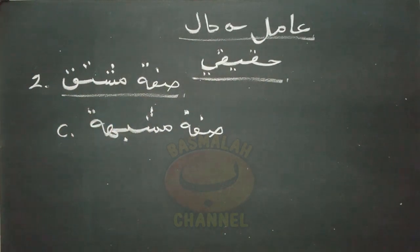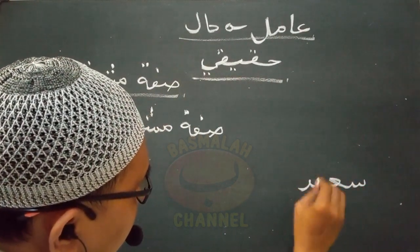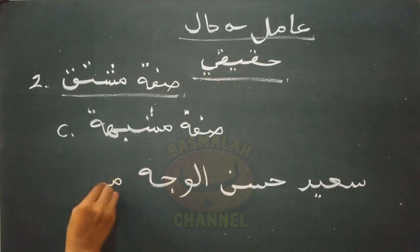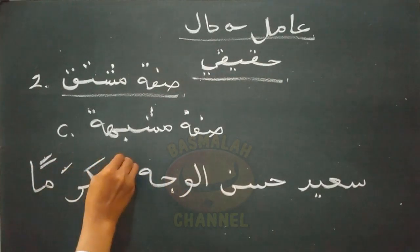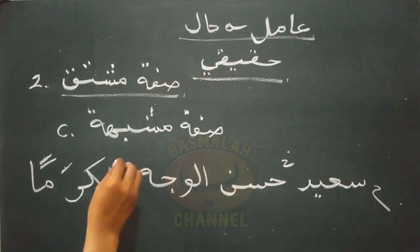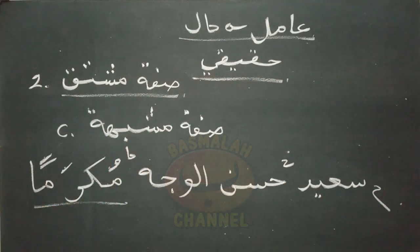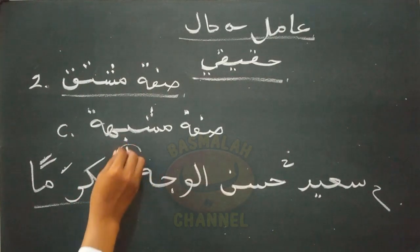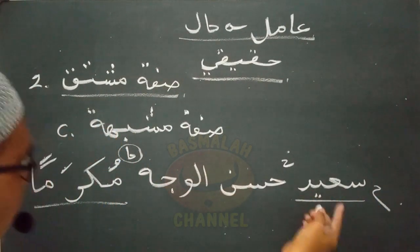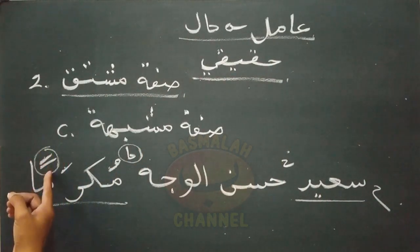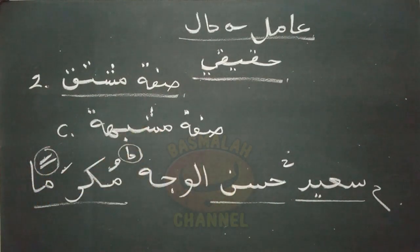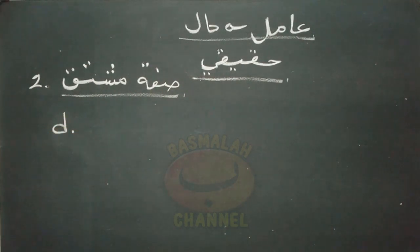Sifat mushtaq selanjutnya berupa sifat musyabbah. Contohnya 'sa'idun hasanul wajhi mukroman' - Sa'id ialah orang yang bagus wajahnya dalam keadaan dihormati. Lafat mukroman kedudukannya sebagai hal yang menjelaskan keadaan daripada lafat sa'idun sebagai sohibul halnya, wajib dinasokkan. Amil yang memerintahkan untuk dibaca nasob adalah lafat hasanul wajhi yang merupakan sifat musyabbah.